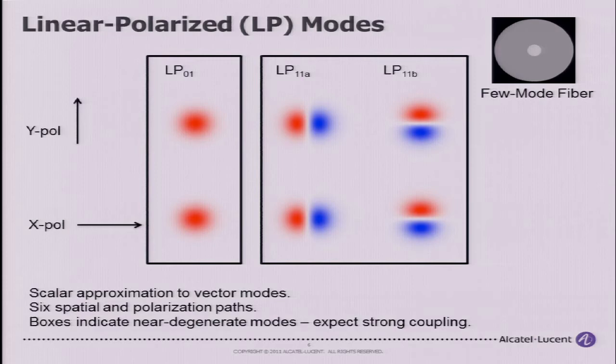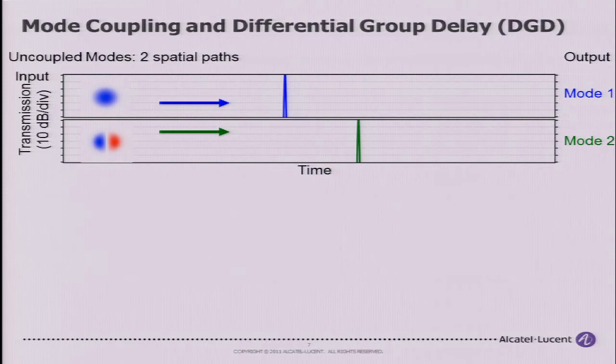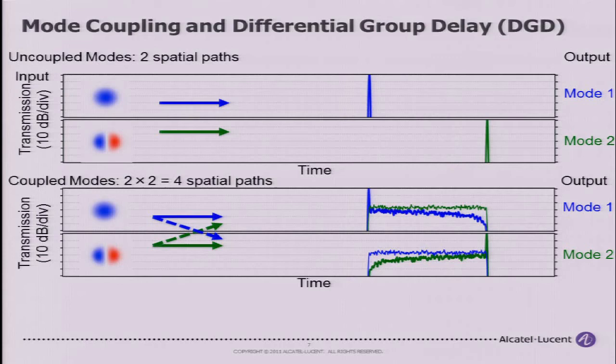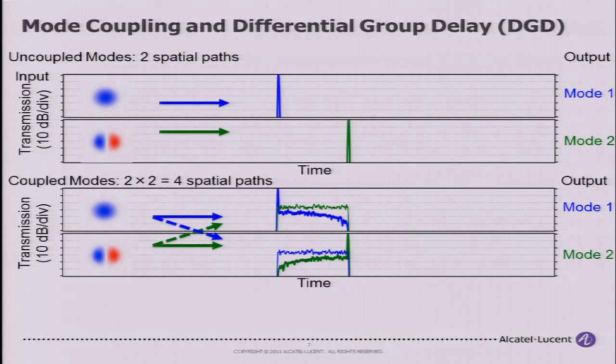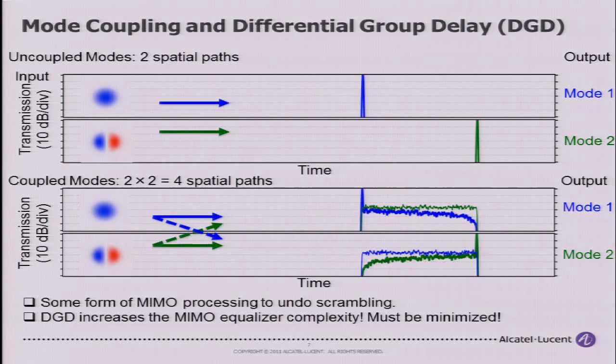In a perfect fiber, the impulse response versus time shows that each mode travels at a different speed — this causes differential group delay. If you also consider that you can't make a perfect fiber with no coupling, combining DGD and coupling leads to very complex impulse responses where light goes from one mode to another and back and forth. The MIMO DSP must undo this scrambling, and compared to single-mode fiber, the DGD can be much larger, making this more challenging.